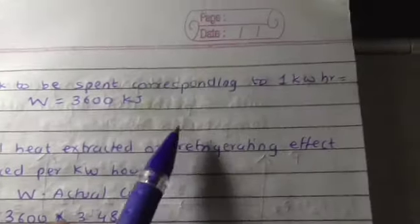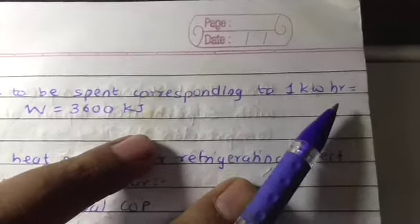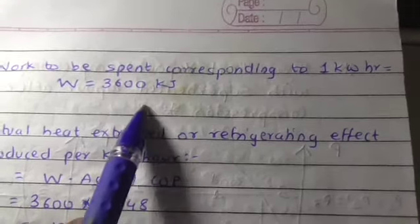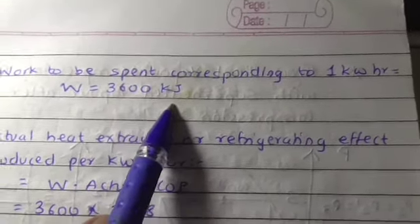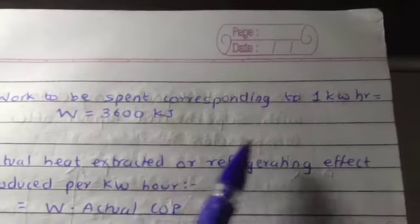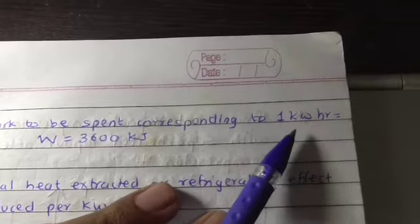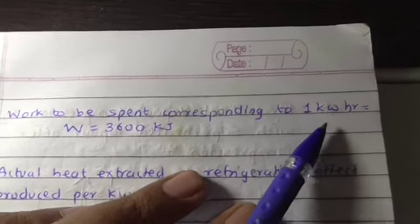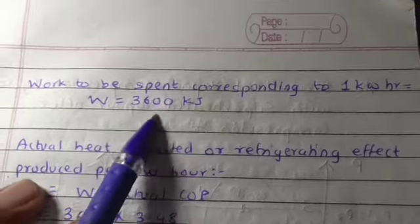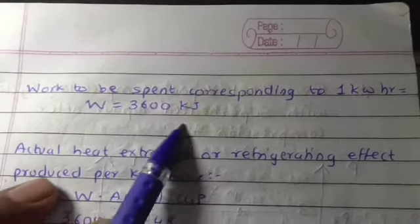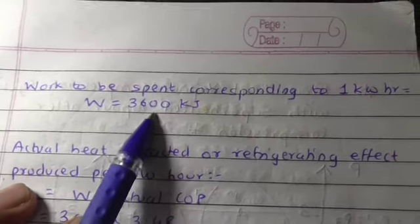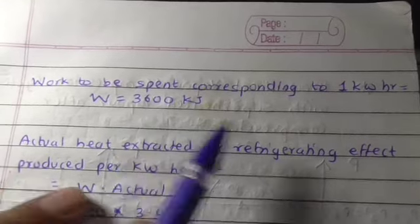Then work to be spent corresponding to 1 kilowatt hour is equal to 3600 kilojoules. For calculating 1 kilowatt per hour value, we require W equals 3600 kilojoules. The work is to be spent so that the value will be 1 kilowatt of power.